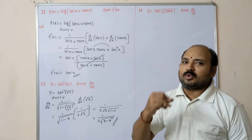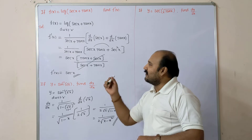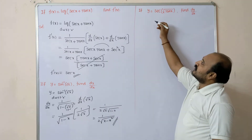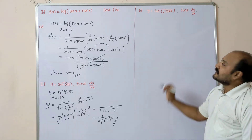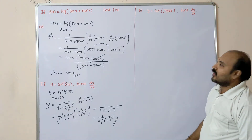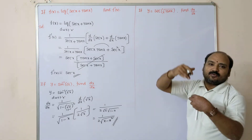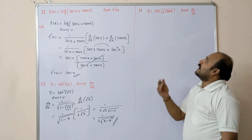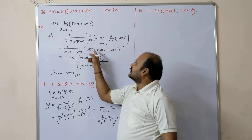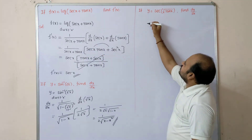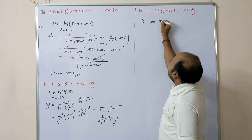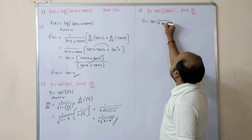In BSAQs, each video I will give a minimum of 2 to 3 questions. Now the third question: if y = sec(√tan x), find dy/dx. Here √tan x is treated as x, so indirectly d/dx of sec(x) = sec x · tan x. Given: y = sec(√tan x).